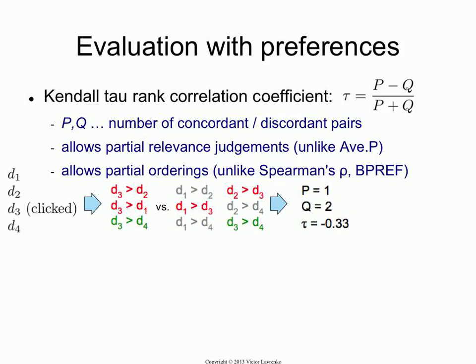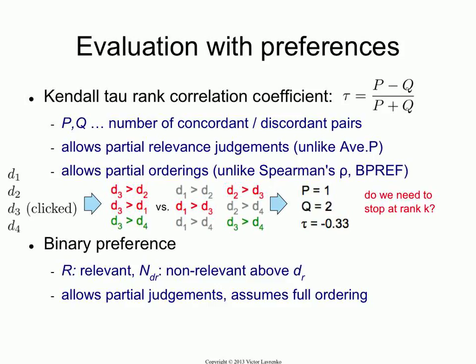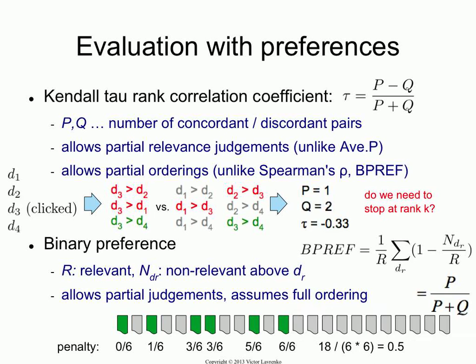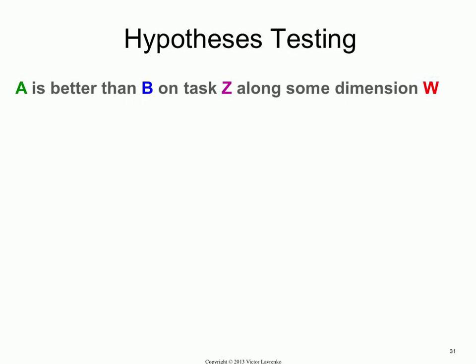There's another metric which looks at preferences called bpref, which is just a variation of Kendall Tau. We'll go over that next.